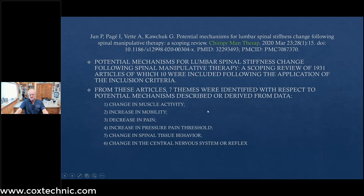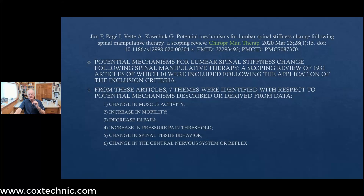That leads us to the work of Jun, published in March of last year in Chiropractic Manual Therapy, on the potential mechanisms for lumbar spine stenosis change following spinal manipulative therapy. This paper showed six things that happen when we do spine manipulation: we change muscle activity, we increase range of motion, decrease pain, lower the pain threshold, we change the spinal tissue behavior and myofascial changes, and we also have autonomic nervous system changes of afferentation.